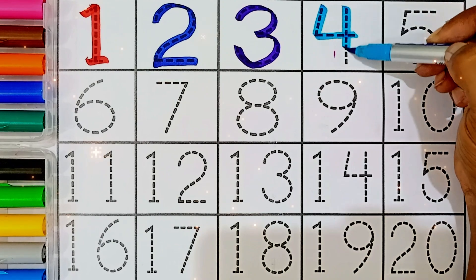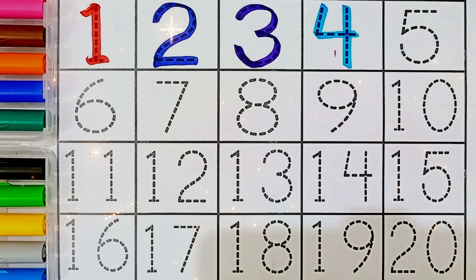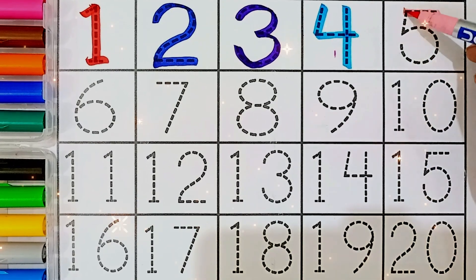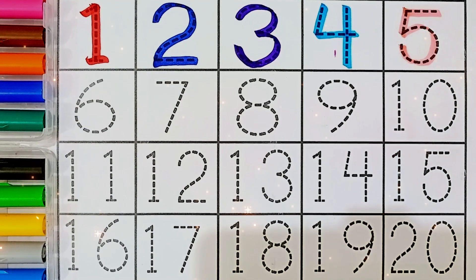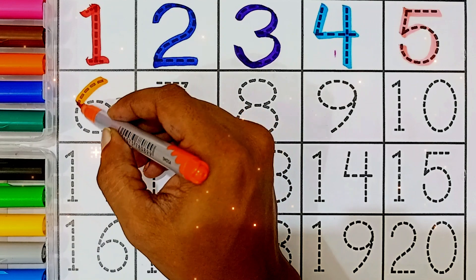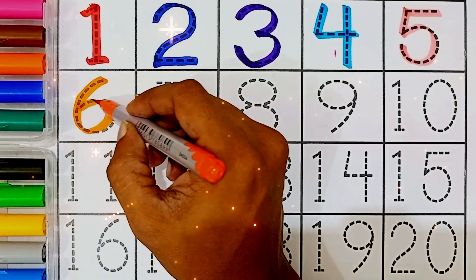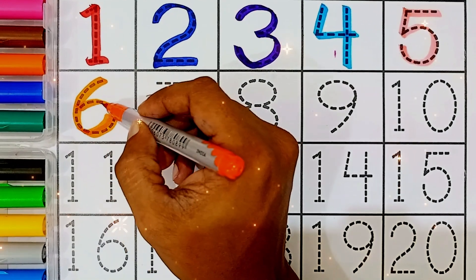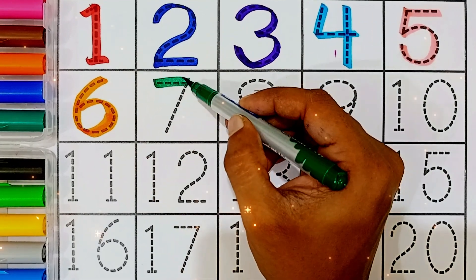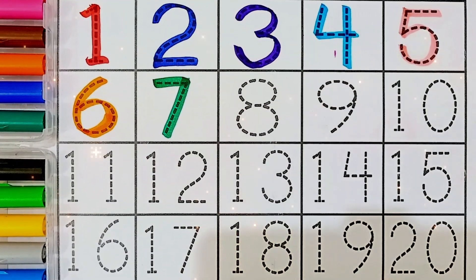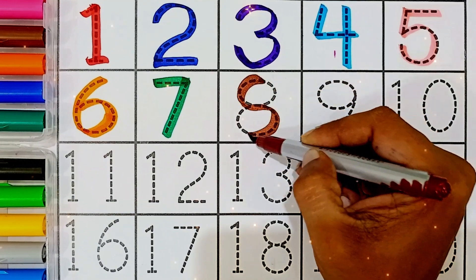Four, sky blue color. Four. Five, light pink color. Five. Six, orange color. Six. Seven, green color. Seven. Eight, brown color.